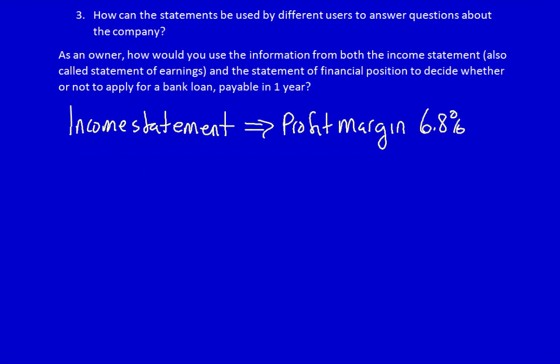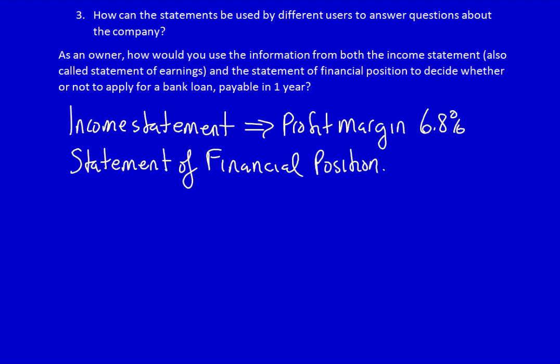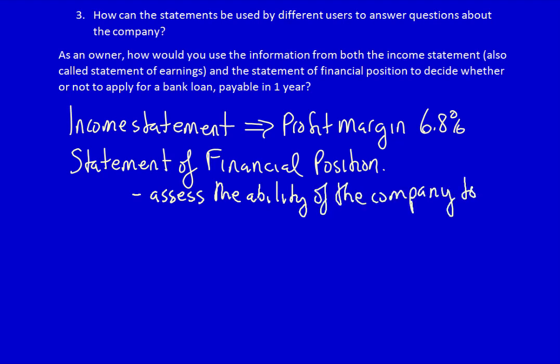What else would the owner use to assess whether they would be able to apply for a bank loan? They'd use the statement of financial position. The statement of financial position allows us to assess the ability of the company to meet their current obligations. Since the company is looking to borrow money for only one year, we're not as concerned about the long-term liabilities as we are about the current liabilities.